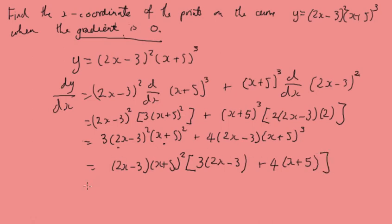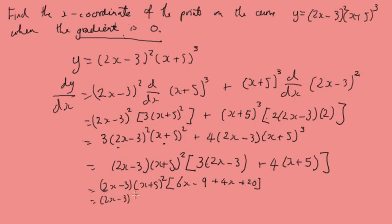We simplify the bracket: 3(2x minus 3) plus 4(x plus 5) gives 6x minus 9 plus 4x plus 20, which equals 10x plus 11. So dy by dx equals (2x minus 3)(x plus 5) squared times (10x plus 11).